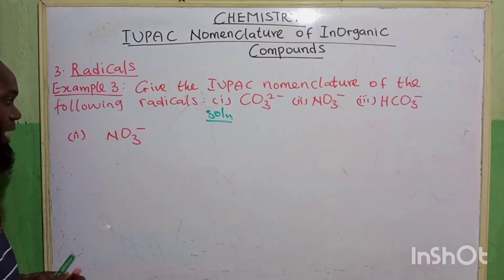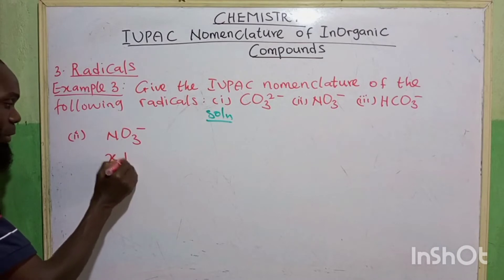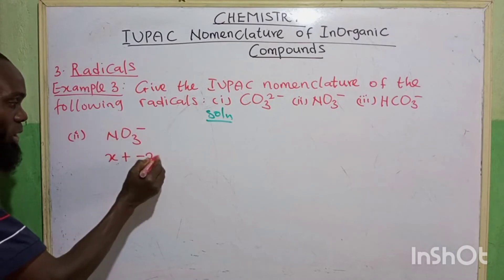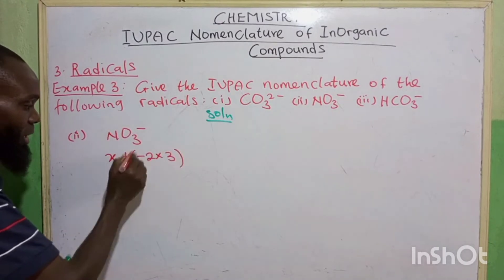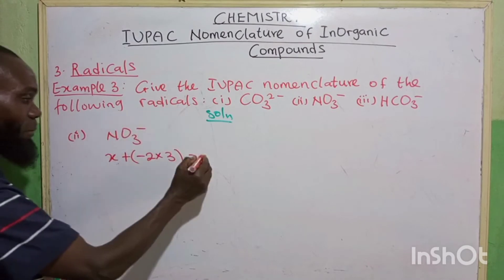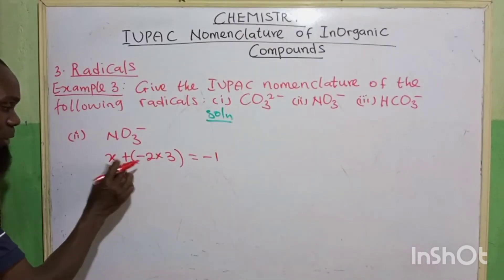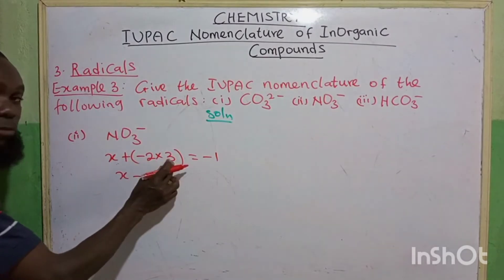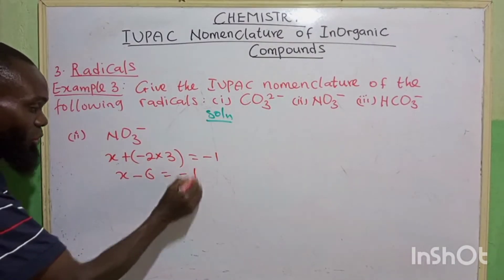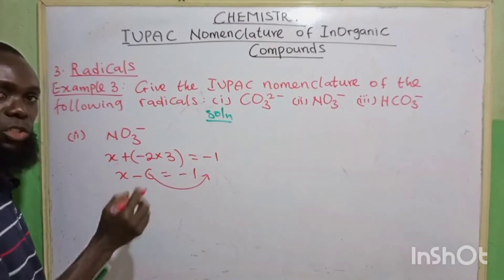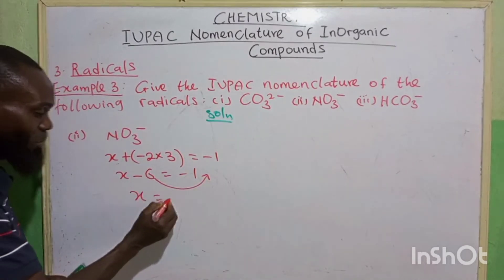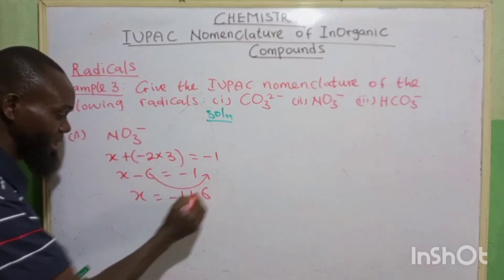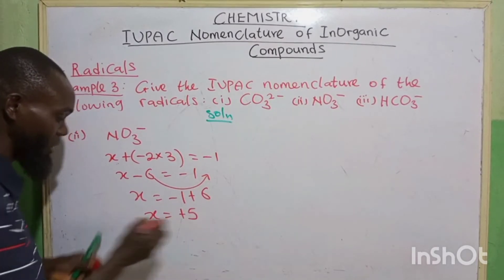The second one, NO3 minus. So the unknown is this nitrogen. X plus oxygen is minus 2 multiplied by 3. That equals to the charge on it, which is minus 1. So X plus minus 2 times 3, we have 6. It's equal to minus 1. Collect like terms. So we have X is equal to minus 1 plus 6. So X equals to plus 5.